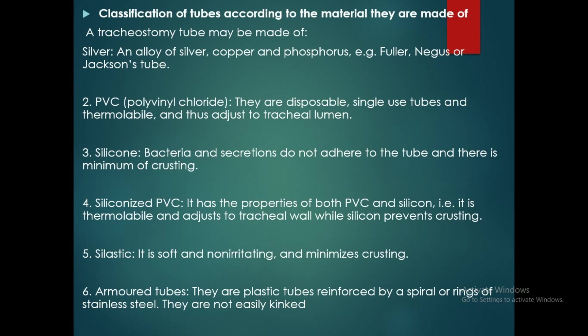Silicone tube: bacteria and secretions do not adhere to the tube, and there is minimum crusting. Siliconized polyvinyl chloride tube: it has the properties of both polyvinyl chloride and silicone — that is, it is thermosensitive and adjusts to the tracheal wall, while silicone prevents crusting. C-elastic tube: it is soft and non-irritating and minimizes crusting. Armoured tube: they are plastic tubes reinforced by a spiral or ring of stainless steel and are not easily kinked.